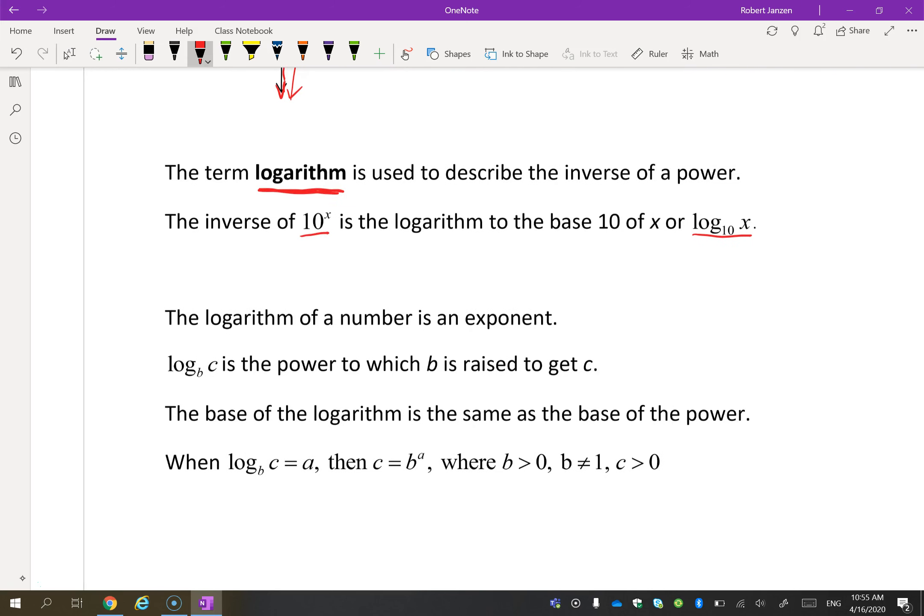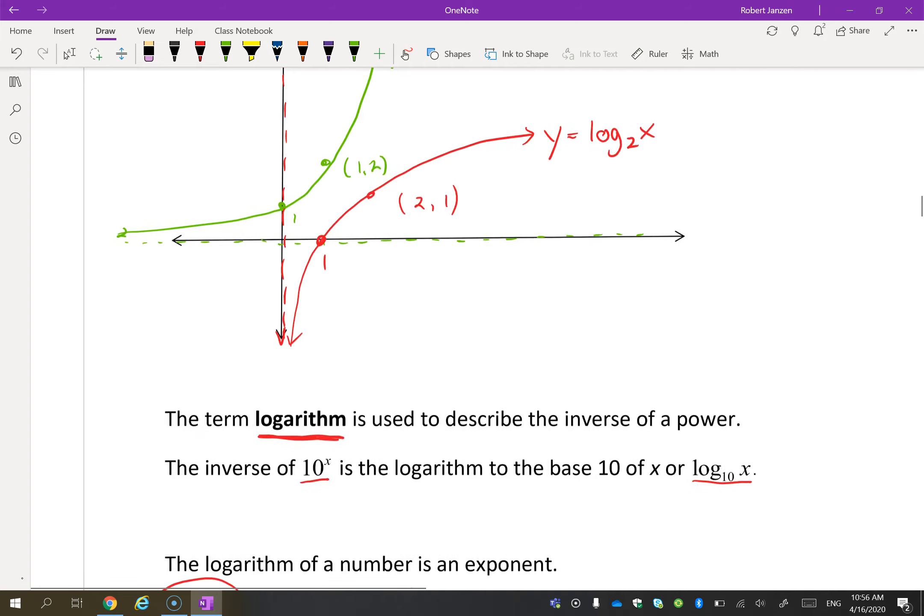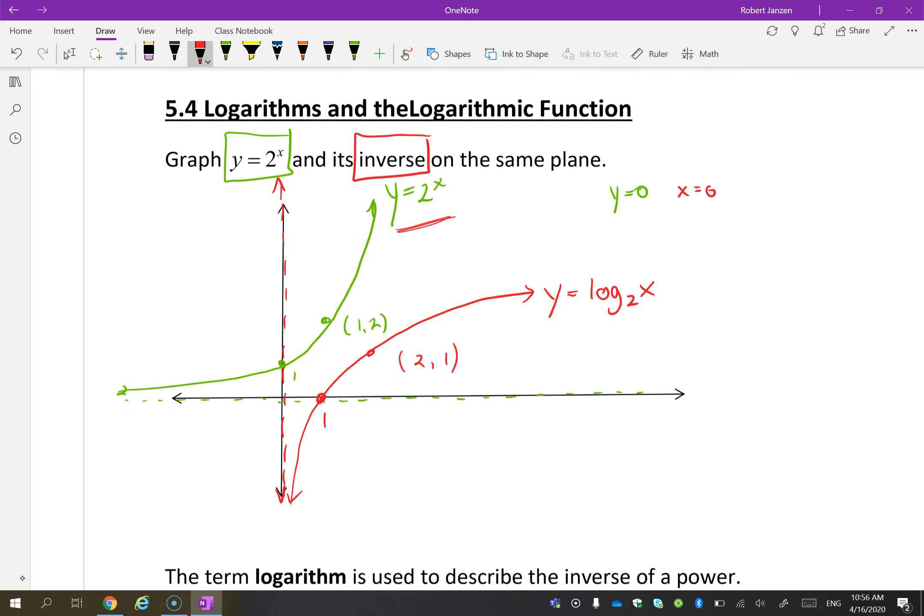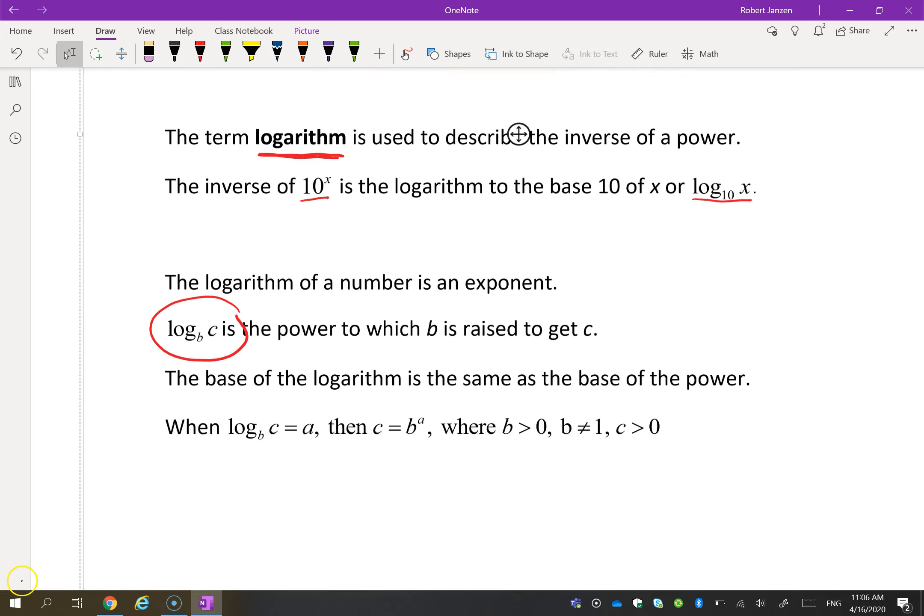The log of a number is an exponent. When I see this, log base b of c, it's the power to which b is raised to get c. Now I'm going to talk about that in a second. When I see this, I can think of that as an exponential. Look back here. Here you have y equals 2 to the power x, and then you have log base 2 of x. So when I see log base b of c equals a, this means the same thing as b to the power of a equals c. Just to get that clear, when I see this right here, this means b to the power of a equals c.